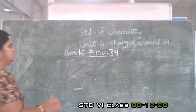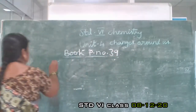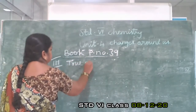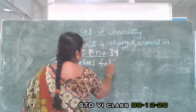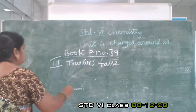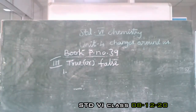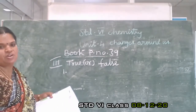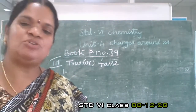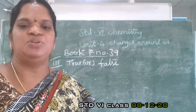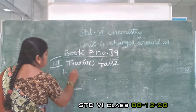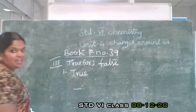Next, third division, same book page number 39: True or False. If false, correct the statement. First question: Growing of teeth in an infant is a slow change. It takes some time, so it is a slow change. Answer is true.